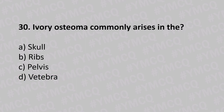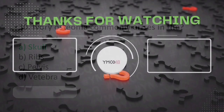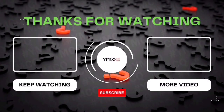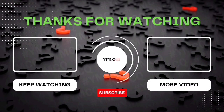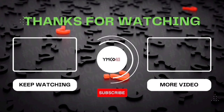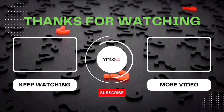Question number thirty: ivory osteoma commonly arises in the option A skull, option B ribs, option C pelvis, option D vertebra. The answer is option A, skull. That's all for today. If you need further clarification, please comment in the comment box. I'll be back with a new series soon. Thank you.